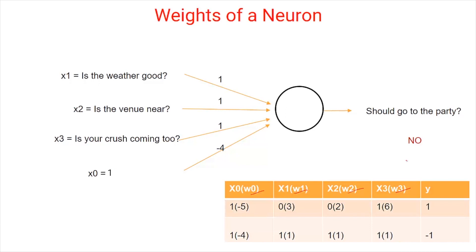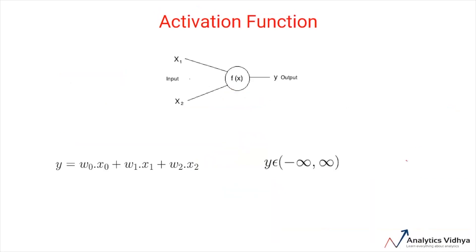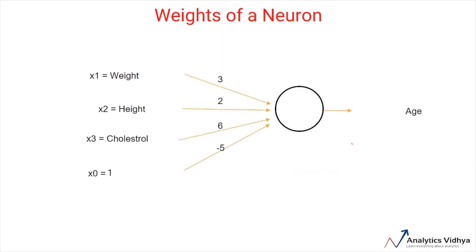Now that we know how a neural network combines different inputs using weights, let's move to the last aspect of a neuron called the activation functions. So far, what we have been doing is simply adding some weighted inputs and calculating some output. Now, this output can reach from minus infinity to infinity and this can be a challenge in many circumstances.